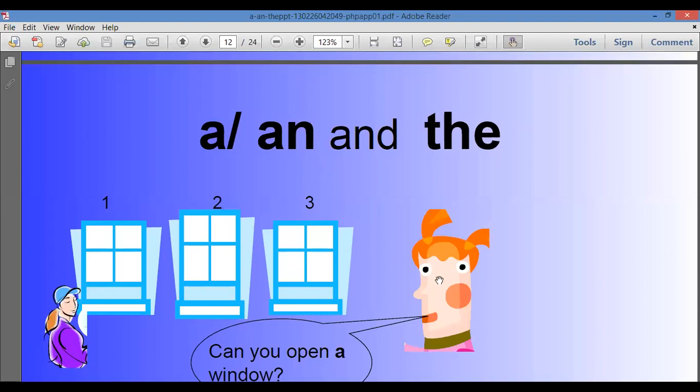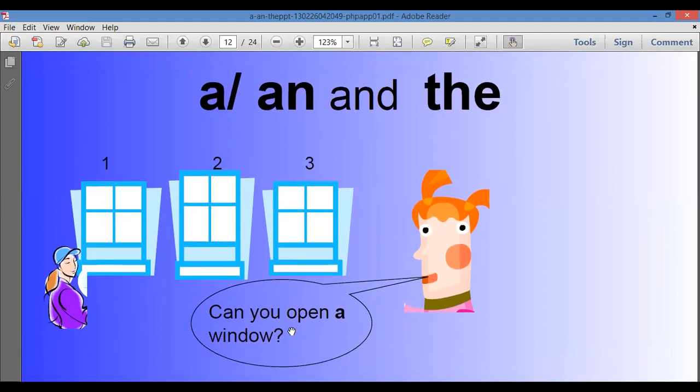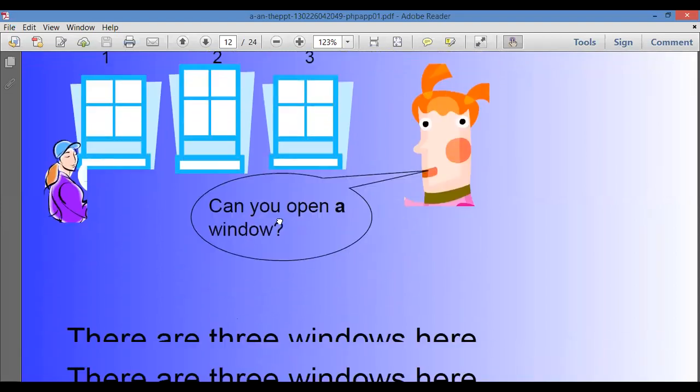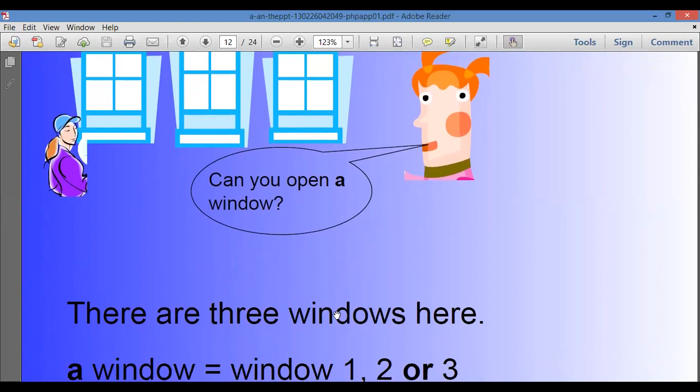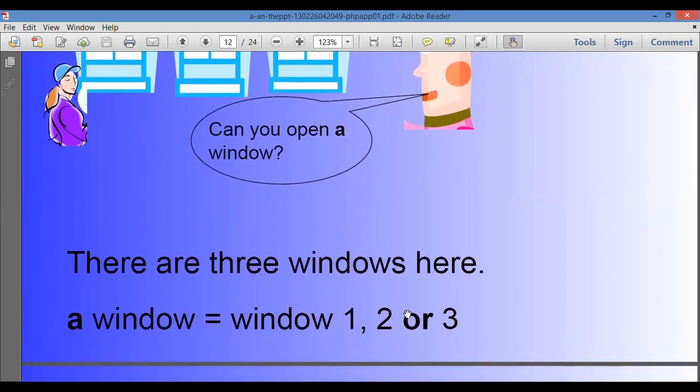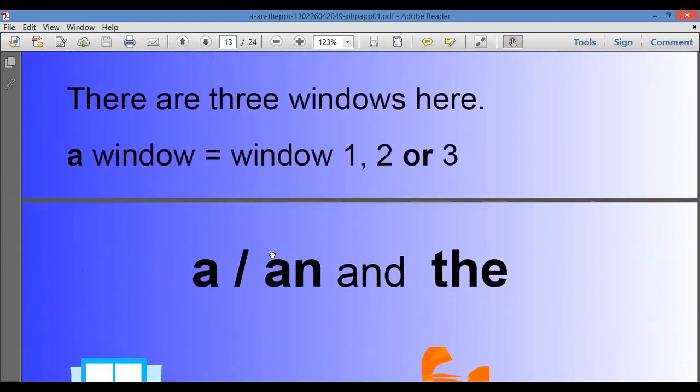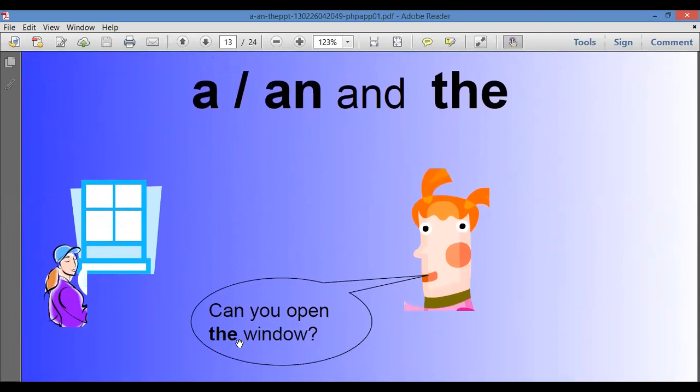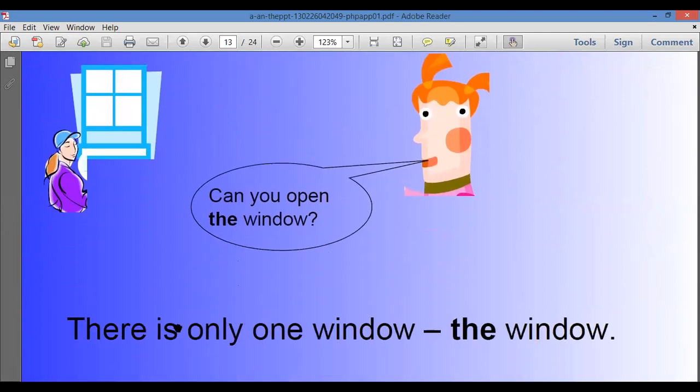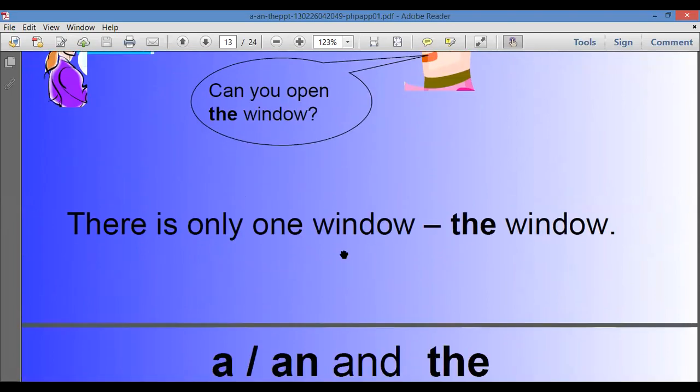A, an, and the. You can open a window. There are three windows here. A window equals one, two, or three. Three means any one of them. Can you open the window? There is only one window. That's why we used the window. Means specific.